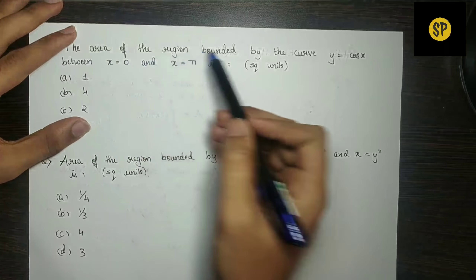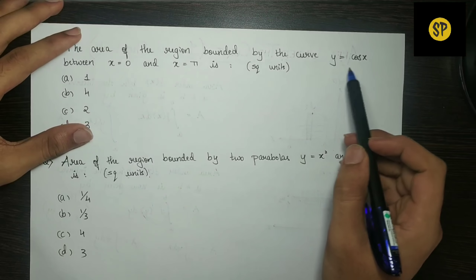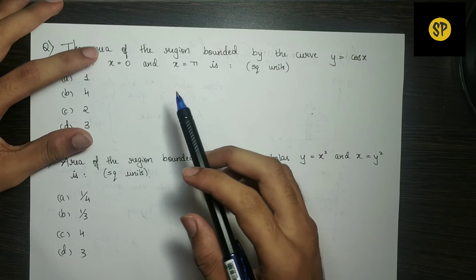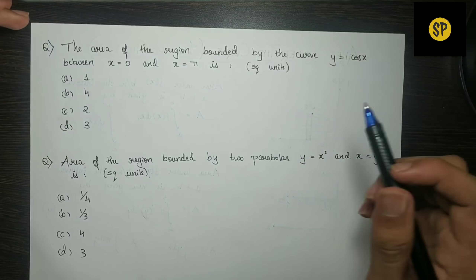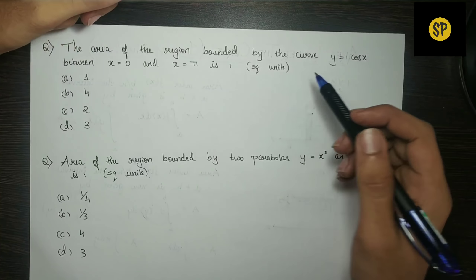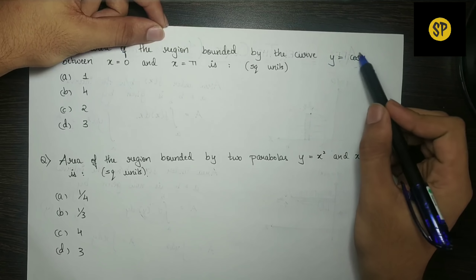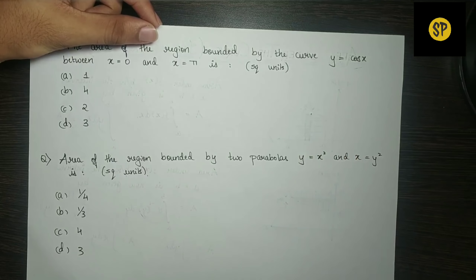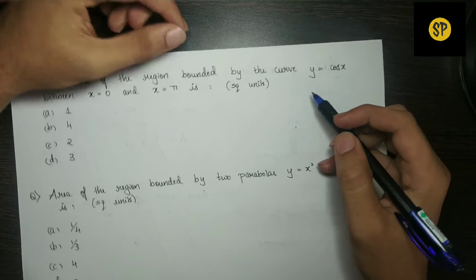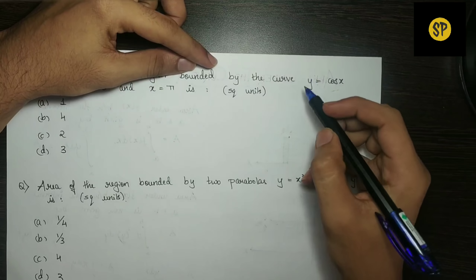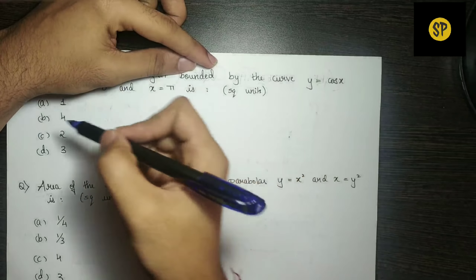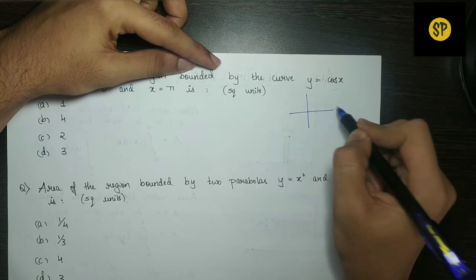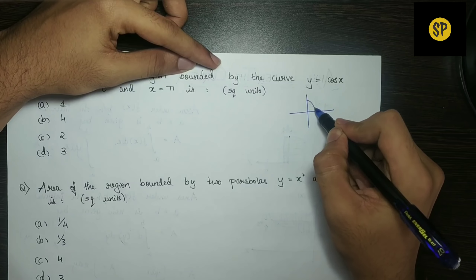Now, what do we do with the question? For example: find the area of the region bounded by the curve y equals cos x, between x equals 0 and x equals pi. If you simply integrate y equals cos x from 0 to pi, the answer comes out to 0. But the answer cannot be 0 — you won't find 0 in the options. If you have a curve in cos x, it looks like this.